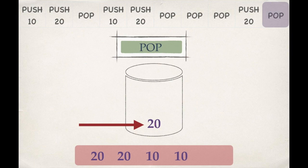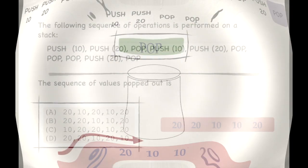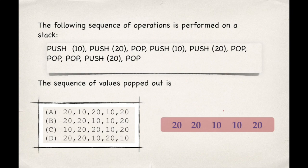The last operation is POP, so we delete the topmost element. This is the sequence of values popped out. The answer is option B.